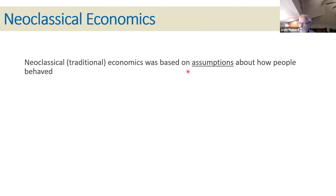Traditional economics was based on certain assumptions about how people behave. These weren't proved — they were just 'we think people behave this way, and if they do, then A, B, and C follow.' Traditional economics was tremendously logical, and that was so attractive when I first started. You could just figure out going from one to two to three to four, and it all made sense, especially microeconomics.